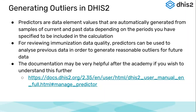Predictors are data element values that are automatically generated from samples of current and past data, depending on the periods you have specified to be included in the calculation. We need to define what a period is that we will select for generating this outlier or predictor value — what will be the current and past data, and for what periods will we use them to calculate the predictors.